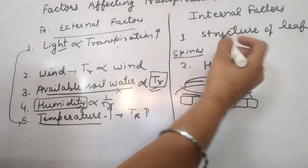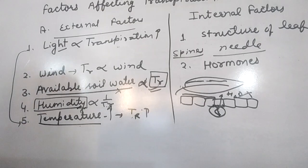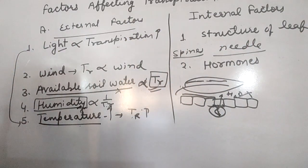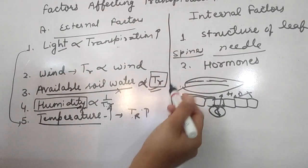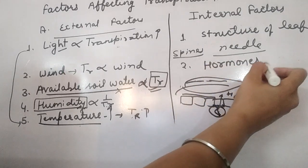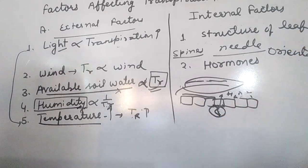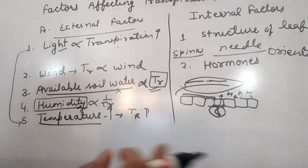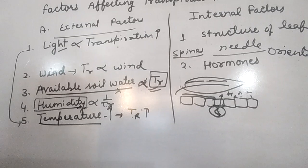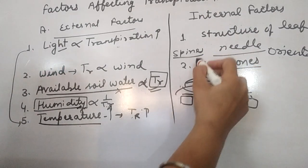In desert plants, leaves are modified into spines or needles, which reduces the transpiration rate. Number of stomata also affects transpiration — more stomata means higher transpiration rate. Orientation of leaves also matters: if leaves are at a right angle, directly exposed to sunlight, transpiration rate is high; if leaves are in a parallel position, the rate is low.